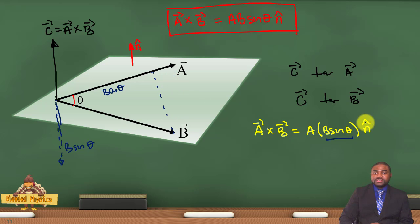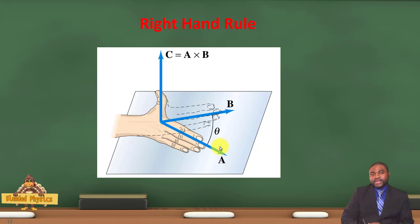Multiplied by a unit vector perpendicular to both A and B. Now to determine the direction of the vector product, we use what we call the right hand rule.